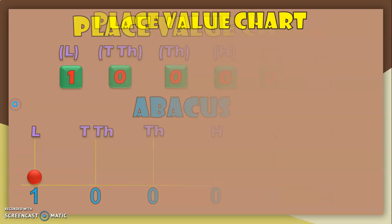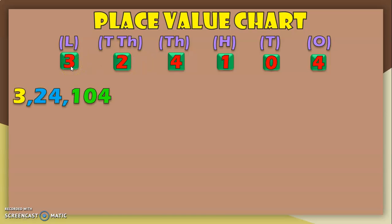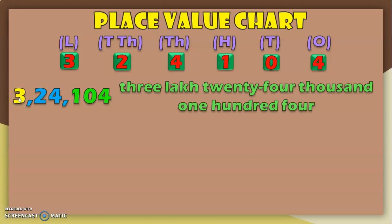Now let us do this with another 6-digit number for better understanding. We have the number 3,24,104. The digits are: 4 in the 1's place, 0 in the 10's place, 1 in the 100's place, 4 in the 1,000's place, 2 in the 10,000's place, and 3 in the lakhs place. Applying the rule of periods: a comma after the 1's, 10's, and 100's period, then another comma after the 1,000's and 10,000's period, leaving the lakhs period. This number is read as 3,24,104.